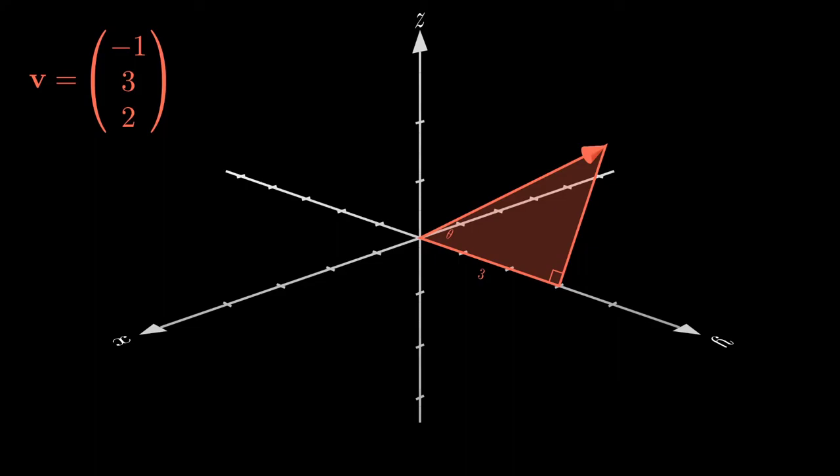But the second thing we can know is from a couple of videos back we saw that the length of a vector can be calculated using Pythagoras on those three coordinates, and so 1 square plus 3 square plus 2 square would give us square root 14 for the length of the red vector.